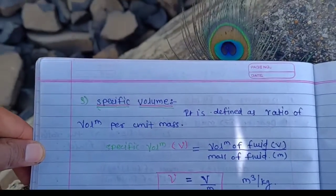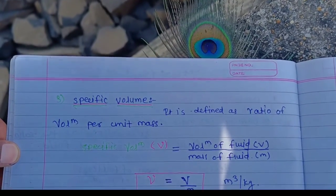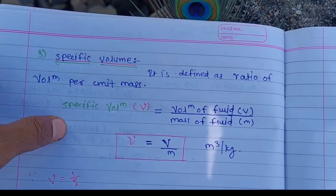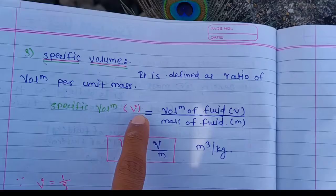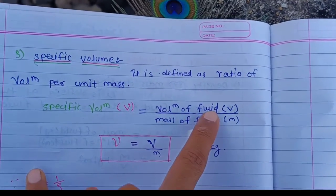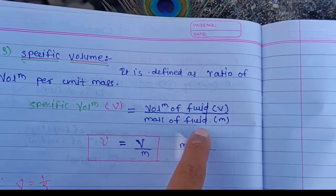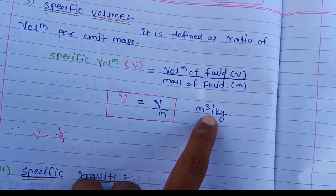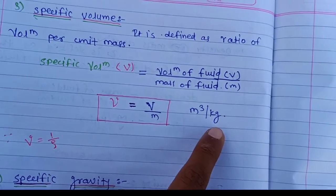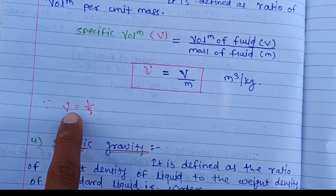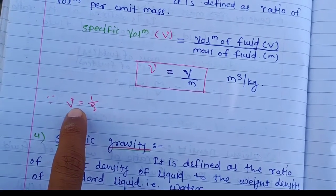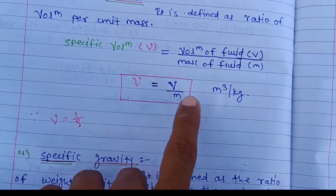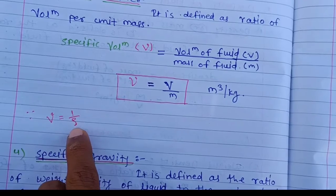Specific volume is defined as the ratio of volume per unit mass. It is denoted by small v. The formula is small v equals capital V divided by M, with units meter cube per kg. It is also equal to one divided by rho, since rho equals M divided by V.